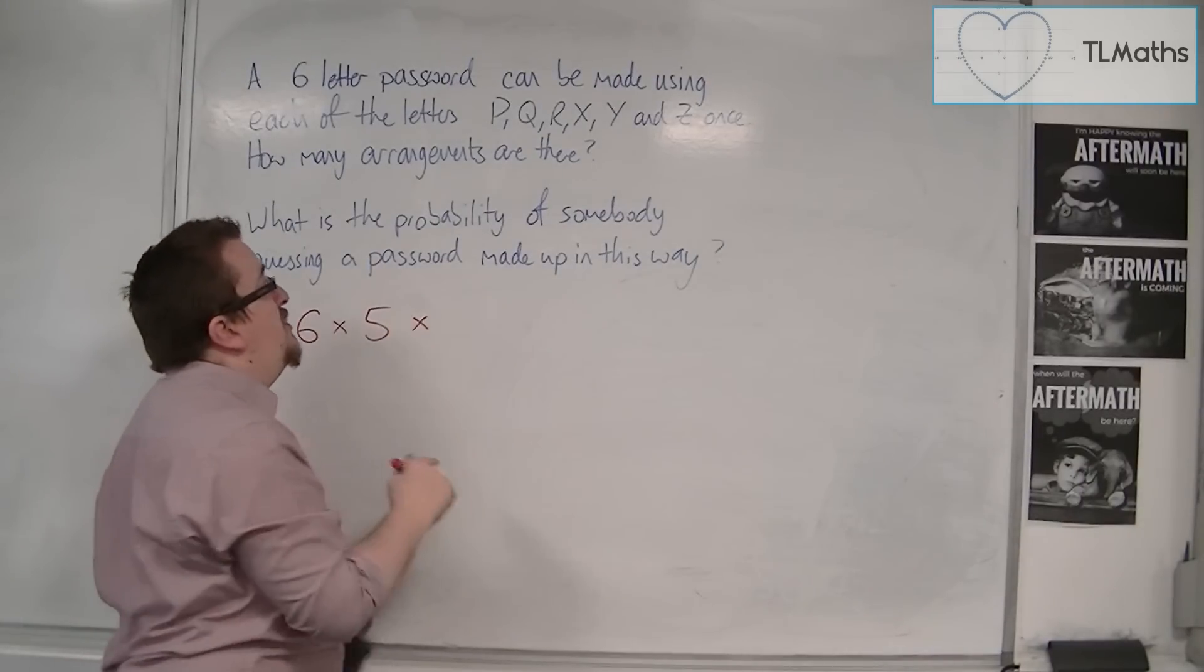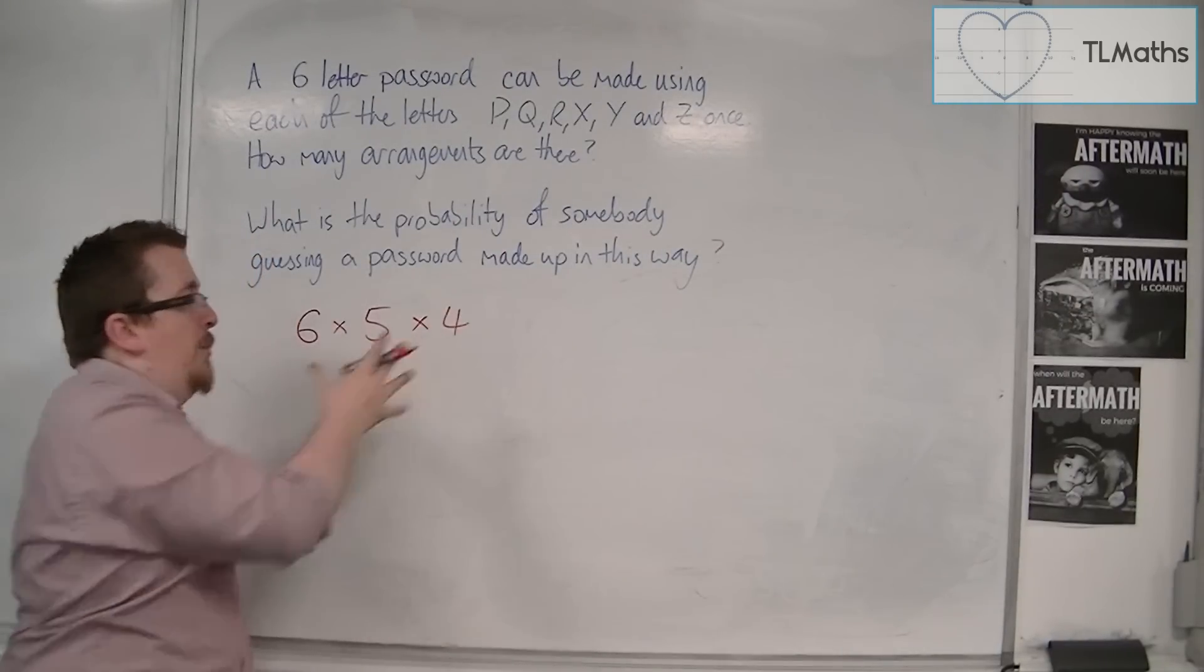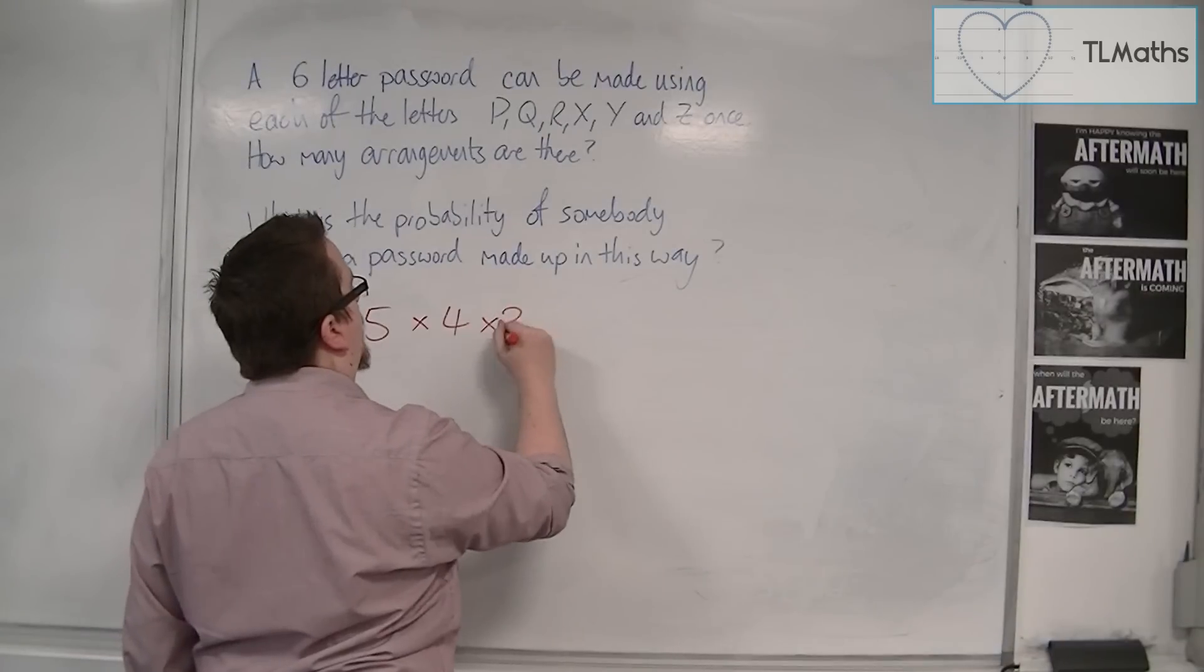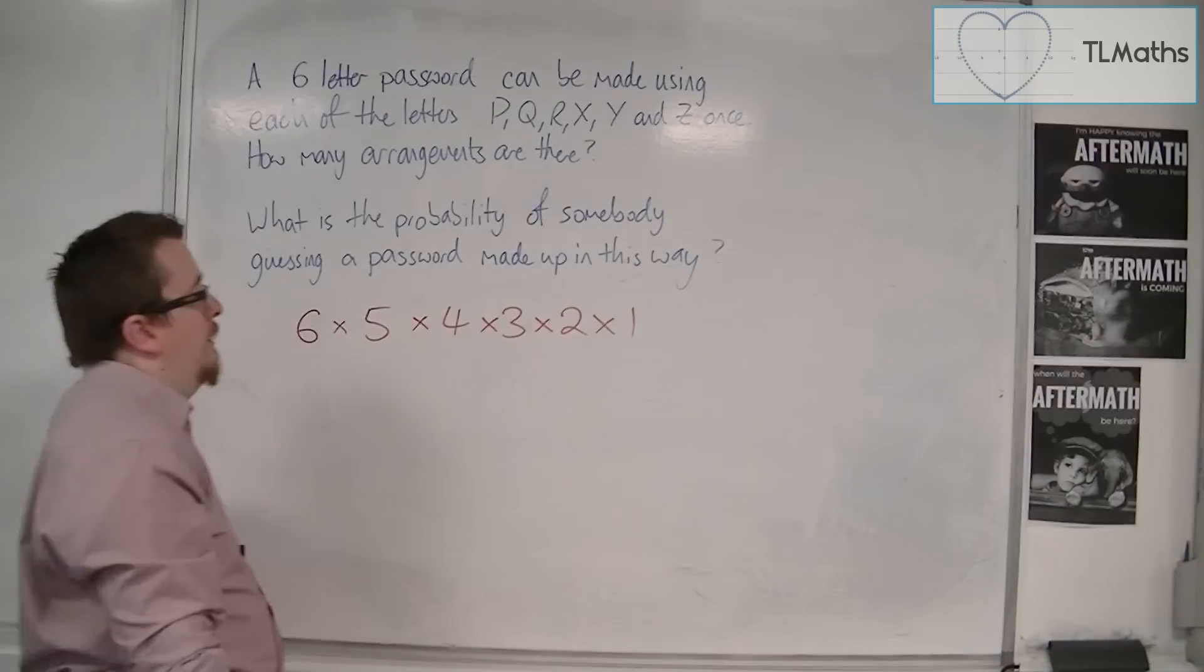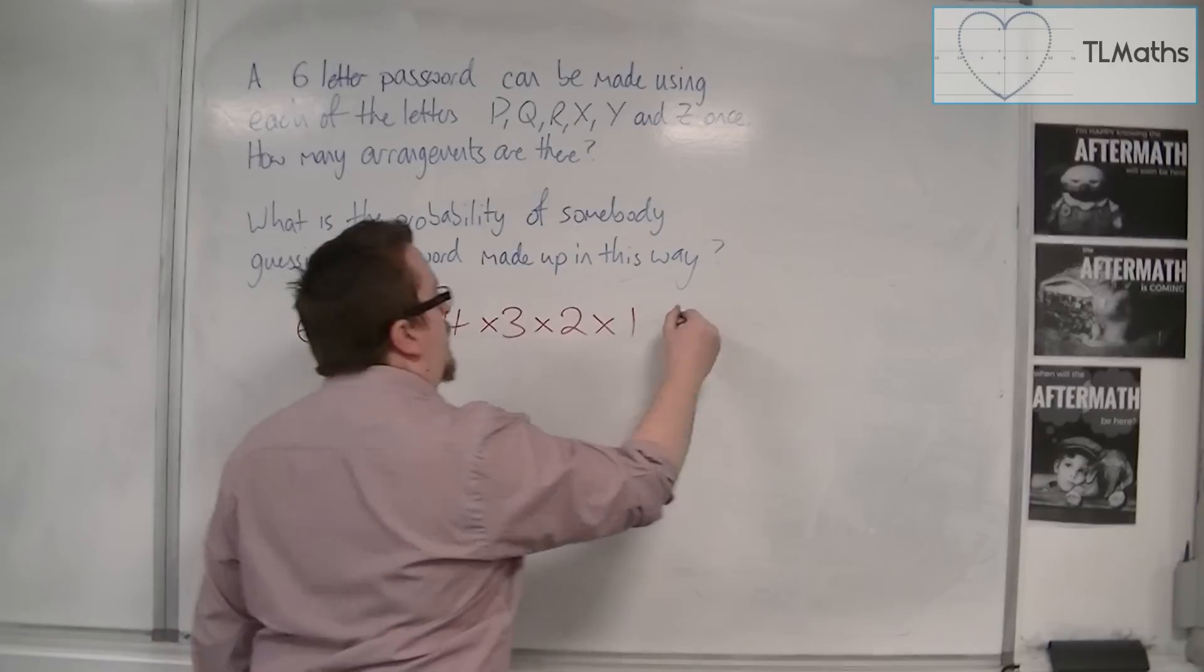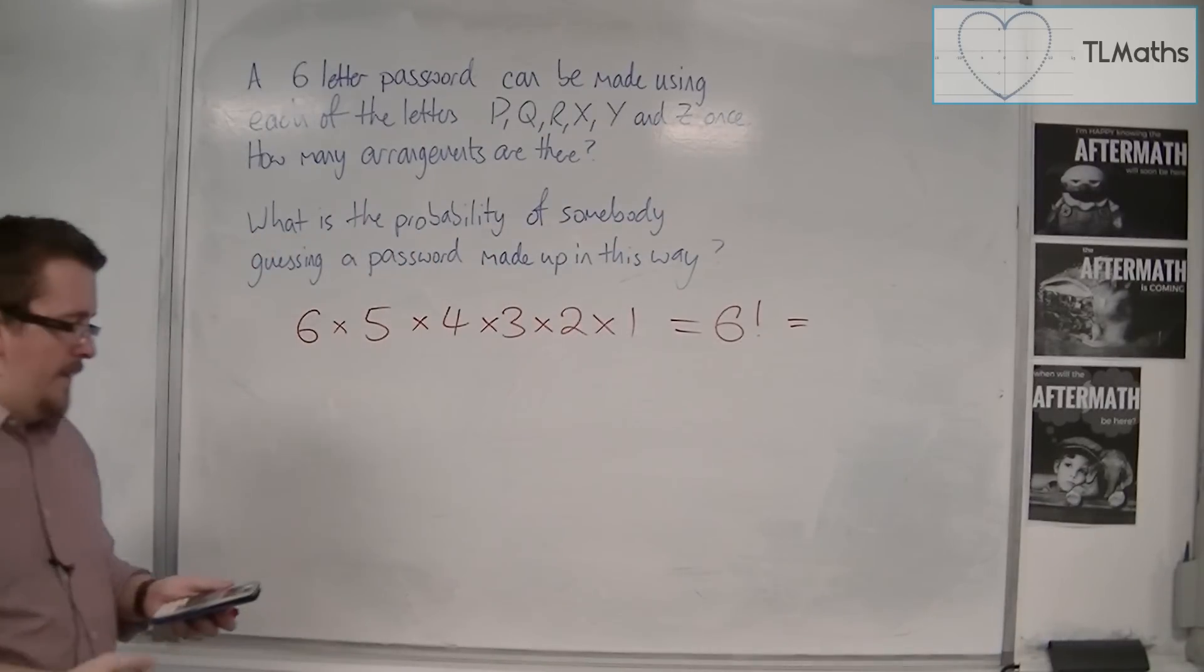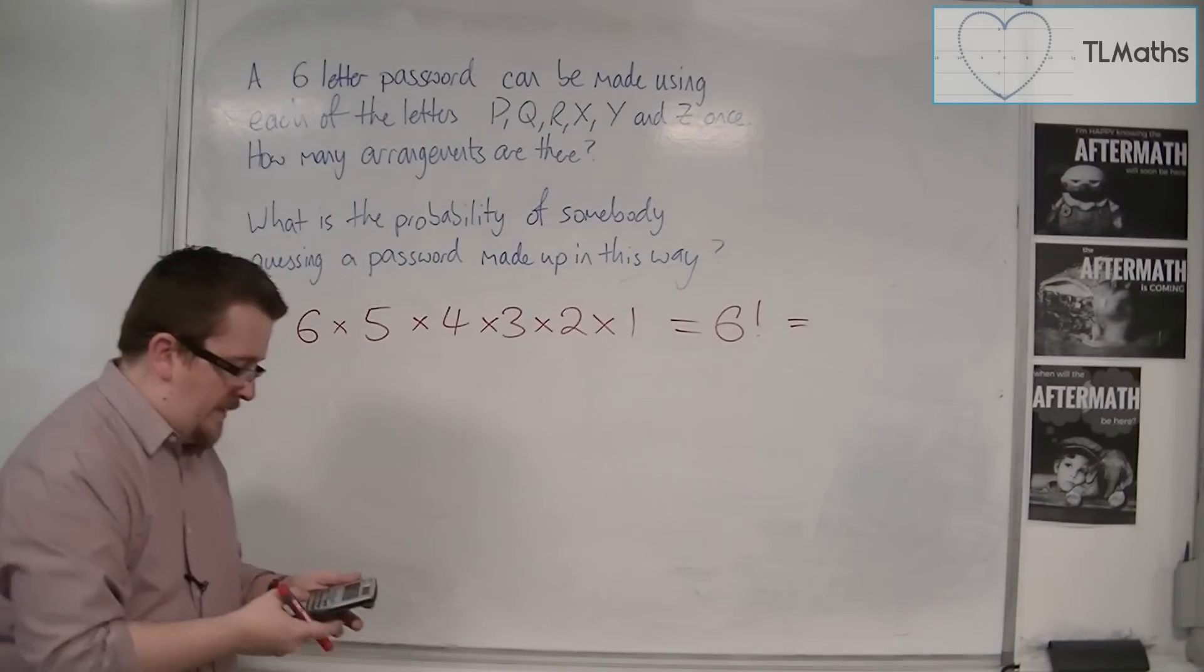Once I've put in two letters, I then have four choices remaining. Then once I've put in three letters, I have three choices remaining, and then two choices, and then one choice. So in actual fact, there are six times five times four times three times two times one, or six factorial, different arrangements in this case.